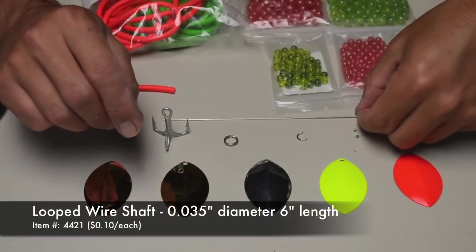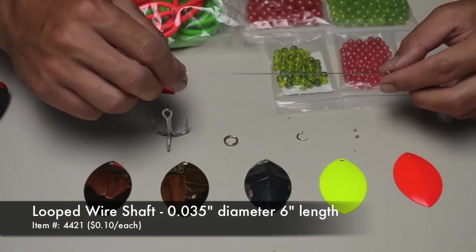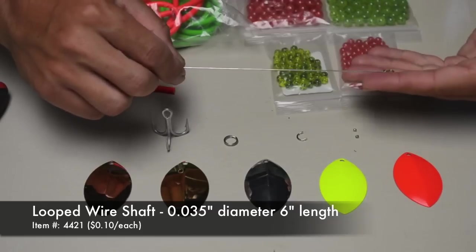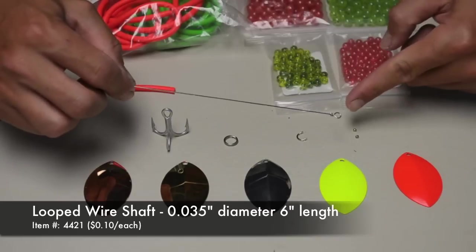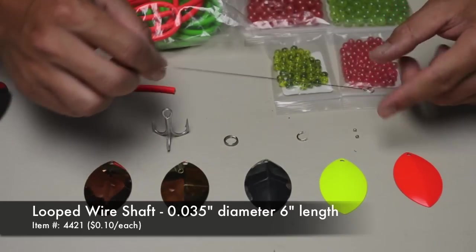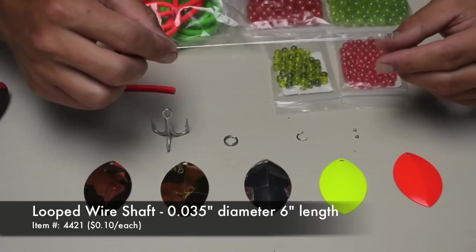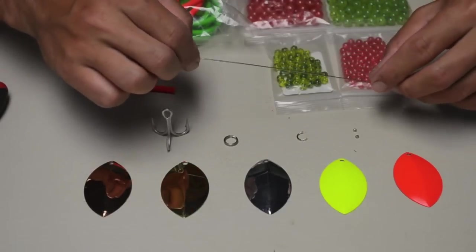The spinner is held together by a six inch piece of 35,100 diameter stainless steel wire with a loop already on the end. These are not very expensive - they'll only set you back about a dime each.